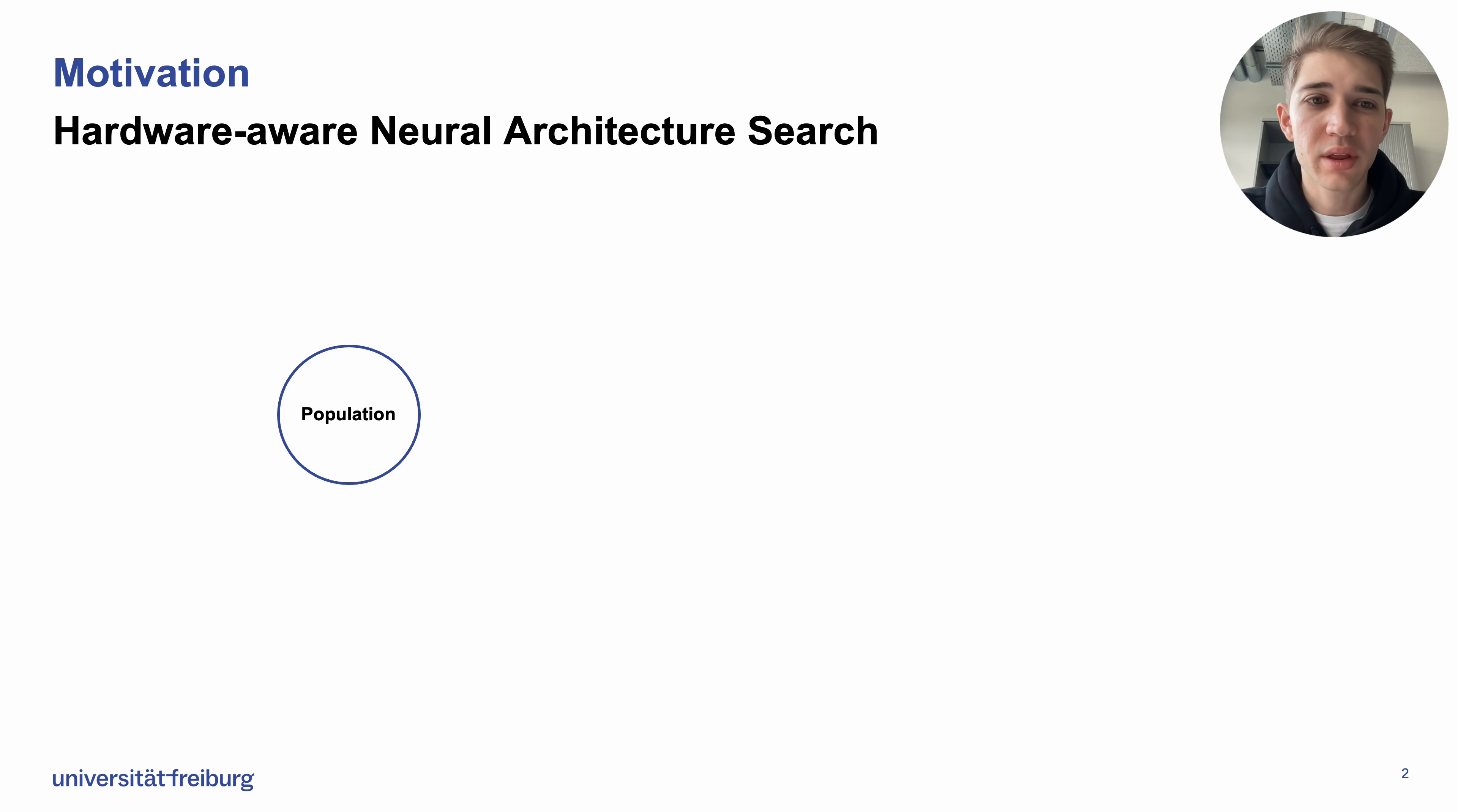Let's get started right away with an example of hardware-aware neural architecture search. To illustrate this, I'll use evolutionary architecture search.